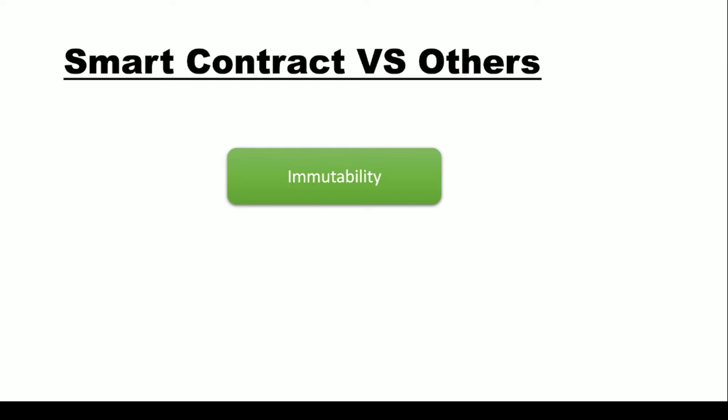The first key property of a smart contract is immutability. Once you deploy your smart contract on the blockchain, you cannot change it. It doesn't matter if it has some vulnerability or bugs — once it is deployed on the blockchain, you cannot change it. In contrast, with traditional programming languages, if you've created a server or a website, you can always make changes to your program. But with a smart contract, once deployed, you cannot change it regardless of any issues.